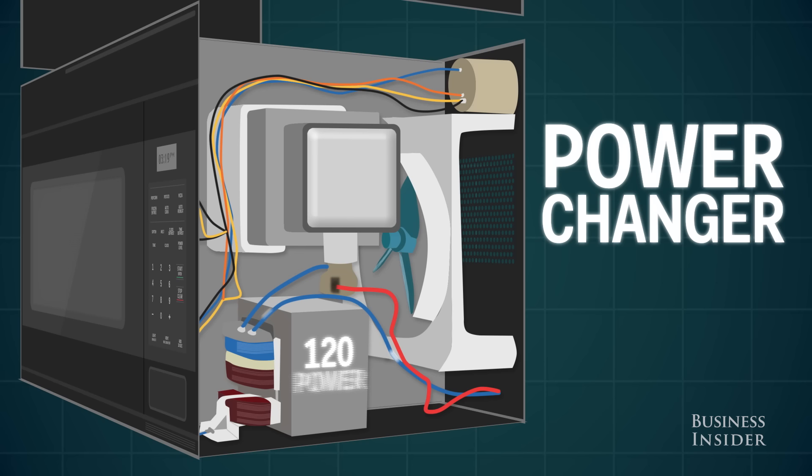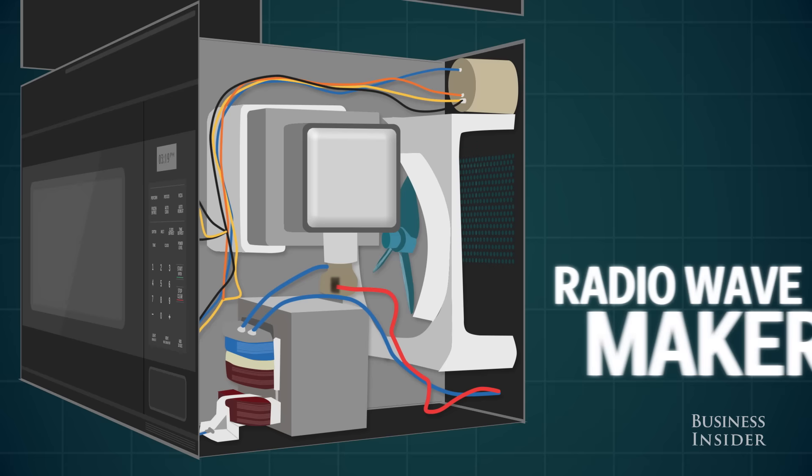It starts with the power changer, which turns the power from the wall into a kind of power that's better for making radio waves.